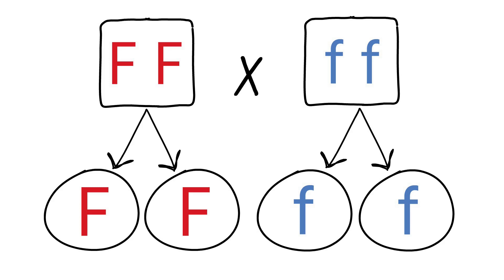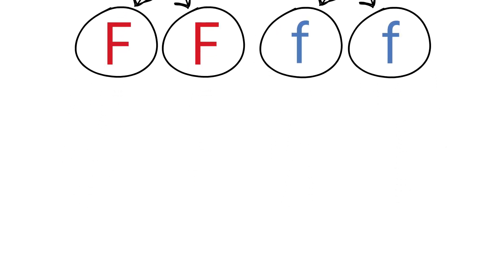Because they're diploid organisms, when they produce gametes — egg cells or sperm — these cells are haploid, meaning they contain half the number of chromosomes, so they only carry one of their two alleles. Since these parents are homozygous, their gametes can only contain either the dominant allele or the recessive allele depending on which parent.